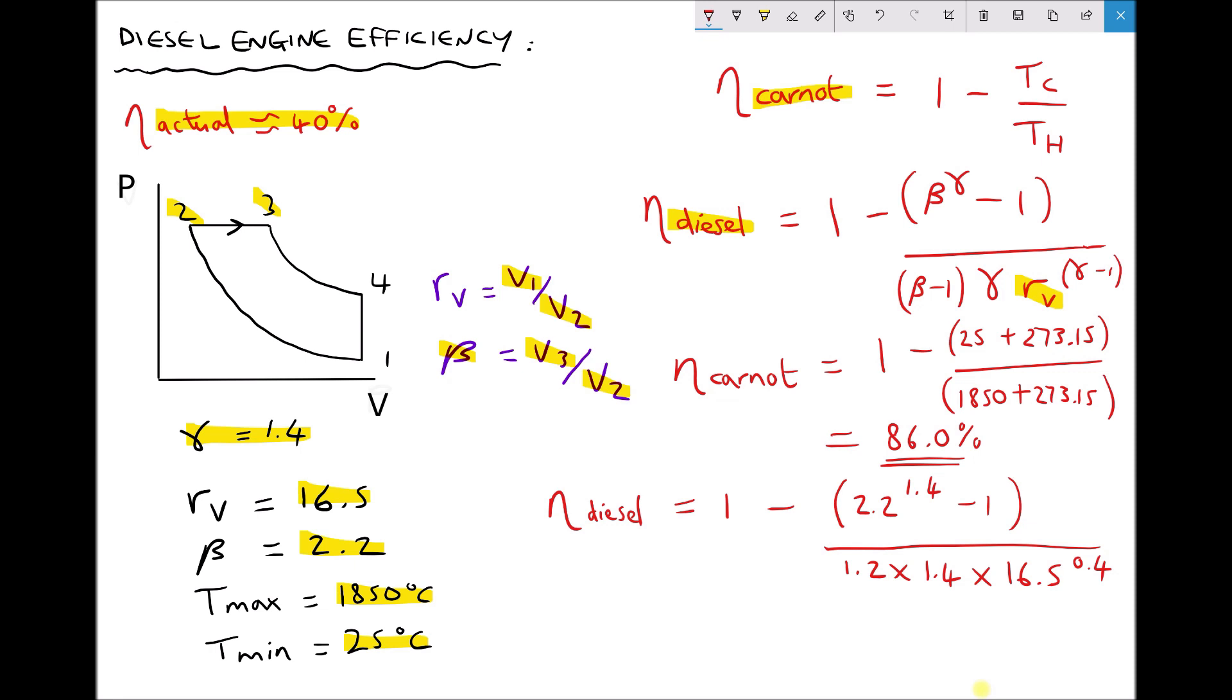So you have a choice here. You can either simplify this fraction first of all or we can input everything we have there into our calculator. Whichever method you choose will yield the same answer. And here we get an ideal diesel efficiency equal to 0.6090 or 60.9%.